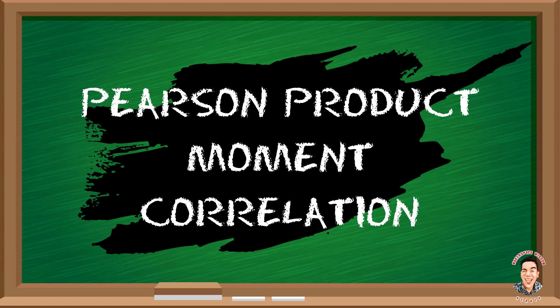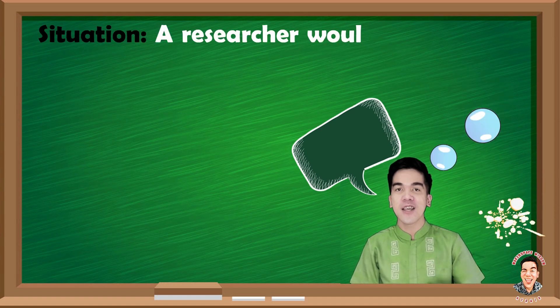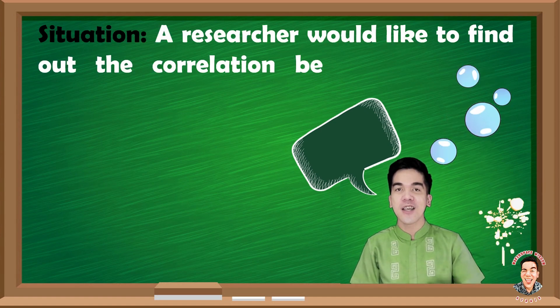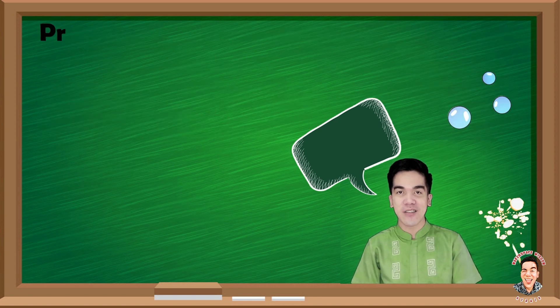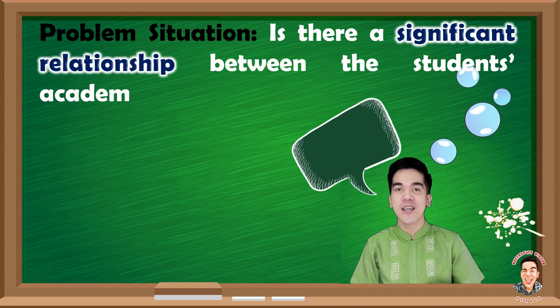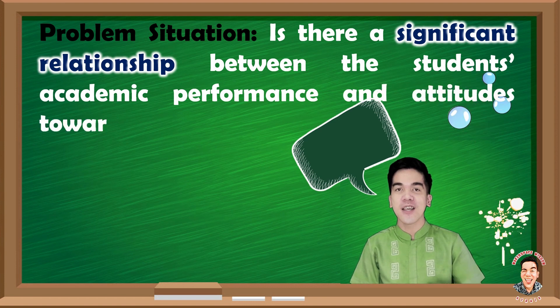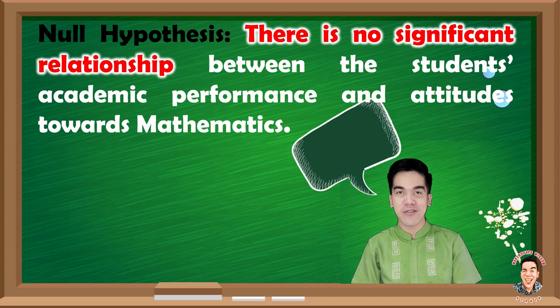The Pearson Product Moment Correlation is a statistic that measures linear correlation between two variables, x and y. Suppose we have this example: a researcher would like to find out the correlation between students' academic performance and attitudes towards mathematics. The problem statement is: is there a significant relationship between the student's academic performance and attitudes towards mathematics? The null hypothesis is: there is no significant relationship between the student's academic performance and attitudes towards mathematics.